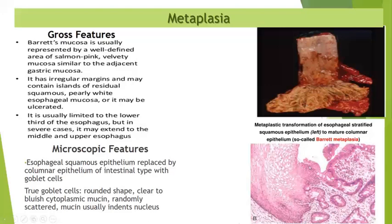The microscopic features of metaplasia: you can see the metaplastic transformation of the esophageal stratified squamous epithelium on the left side to mature columnar epithelium, so-called Barrett's metaplasia. Two goblet cells can be seen — rounded in shape, with clear to bluish cytoplasmic mucin, randomly scattered, which usually indents the nucleus.